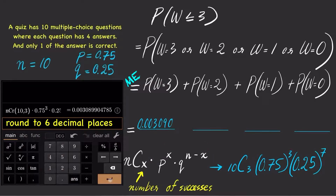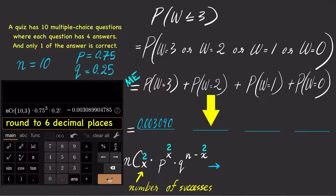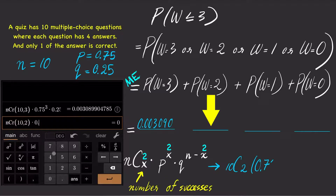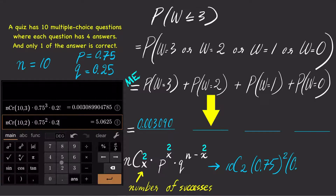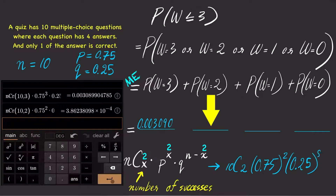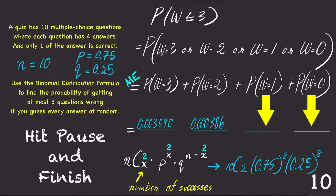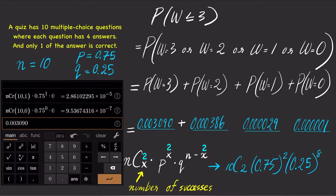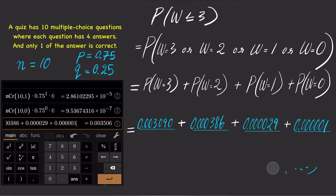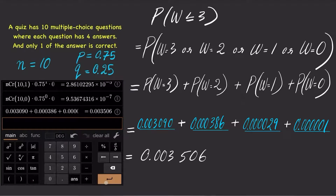Likewise, for P(w=2), the number of successes is 2. Using the binomial distribution formula, we get C(10,2) times 0.75 squared times 0.25 to the 8. Type this into your calculator and we get 0.000386. Adding up all the probabilities, the answer is 0.003506.